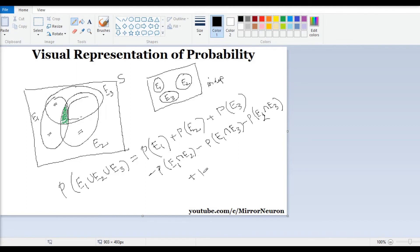So it will be the intersection of all the three events. So it is nothing but P(E1 intersection E2 intersection E3). Now, had there been four events, then we can similarly draw a visual representation of that.